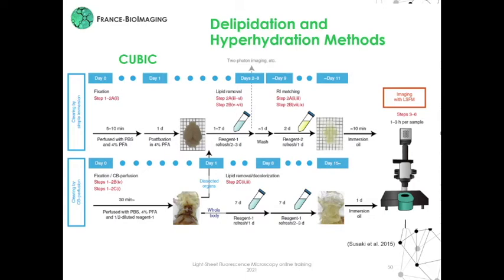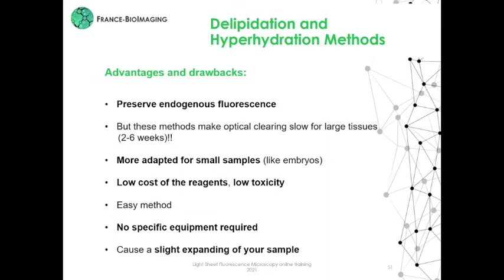To summarize the advantages and the drawbacks of CUBIC clearing methods: they preserve endogenous fluorescence, but optical clearing is slow for large tissue and they are more adapted for small samples. They are cheap and low toxic, easy methods, and no specific equipment is required, although there is expansion of your sample.